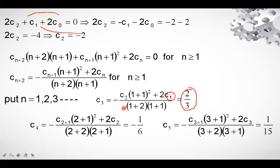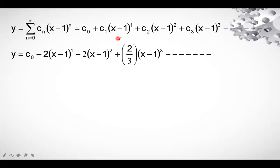Finally, substitute all computed values c₀, c₁, c₂, c₃, … into the expansion y = Σ (n=0 to ∞) cₙ(x − 1)ⁿ. This gives the power series solution in powers of (x − 1) for the ordinary point case.